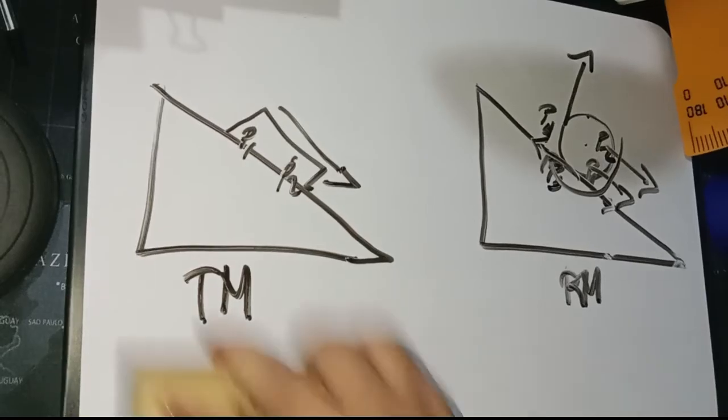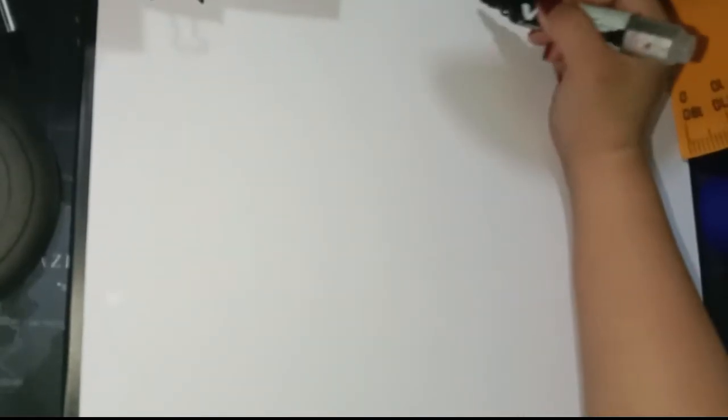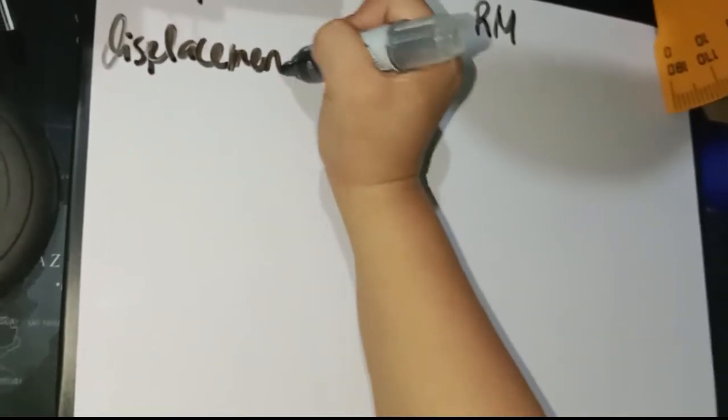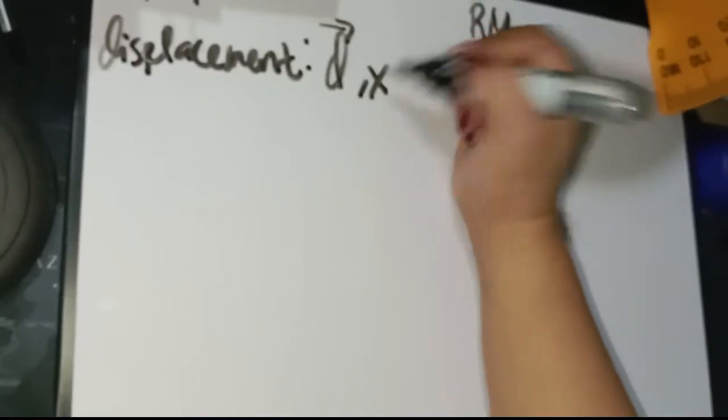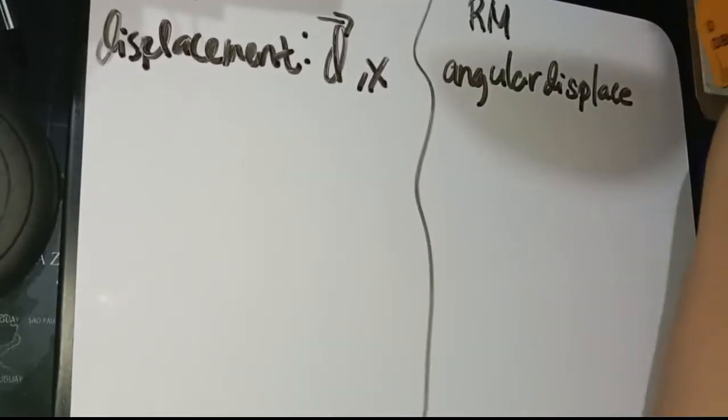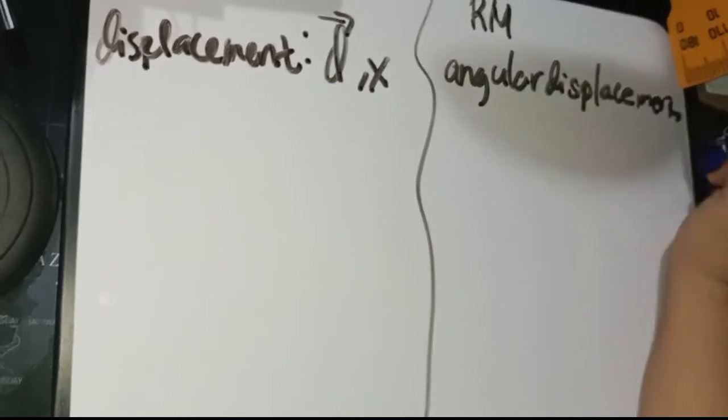Now let us tackle the different analogous expressions of translational motion into rotational motion, expressed as TM and RM respectively. The first variable is displacement. In translatory motion, displacement is represented by the vector D or X, expressed in meters. In rotational motion, it is expressed as angular displacement, represented by the symbol theta.